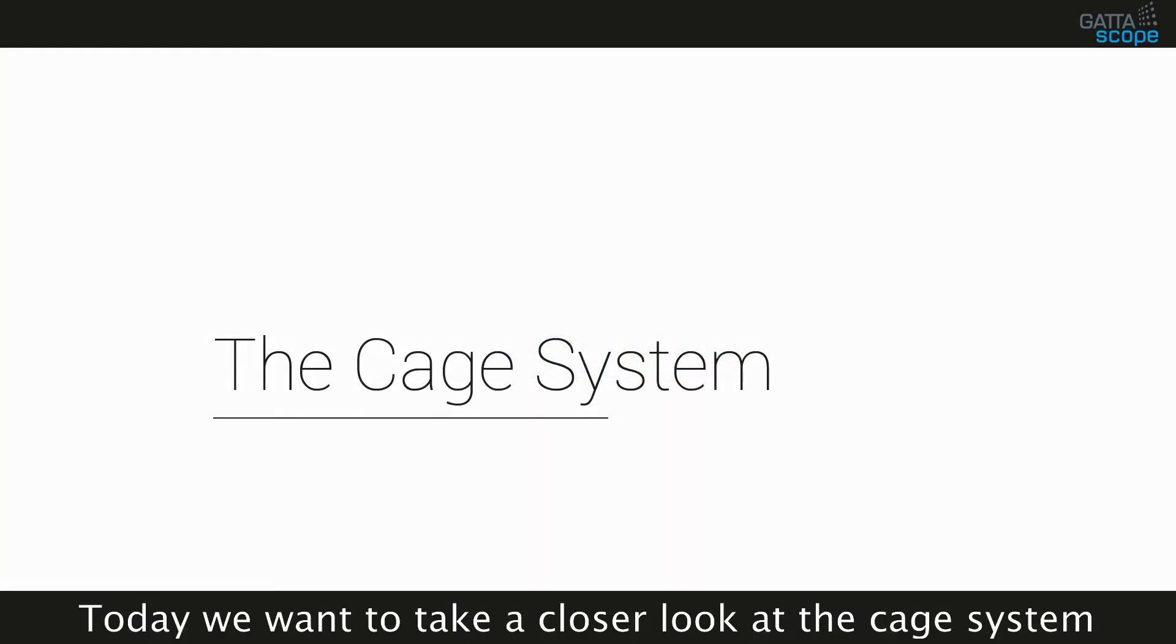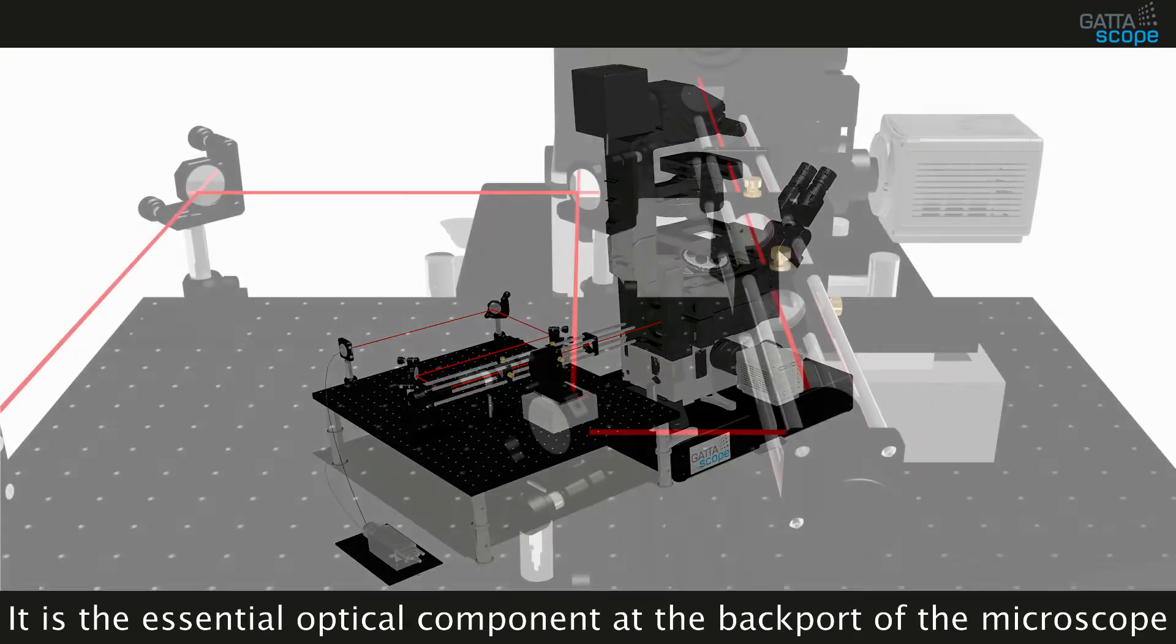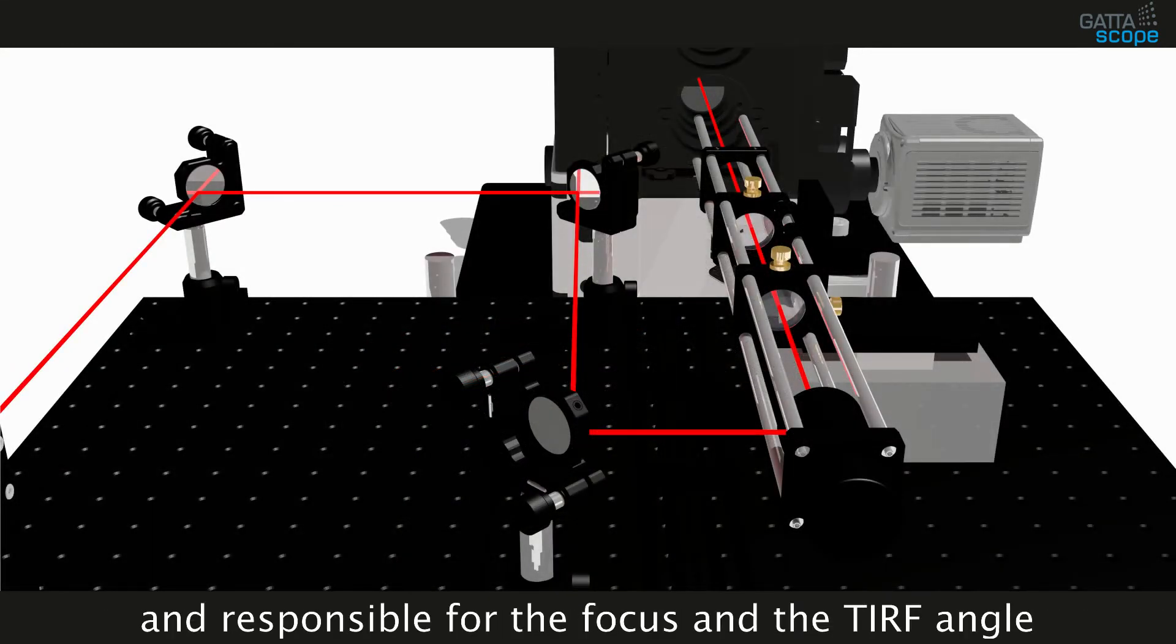Today we want to take a closer look at the CAGE system. It is the essential optical component at the backport of the microscope and responsible for the focus and the TIRF angle.